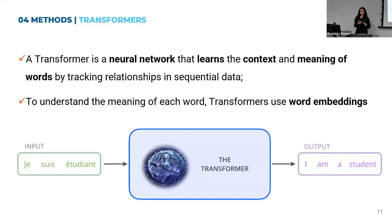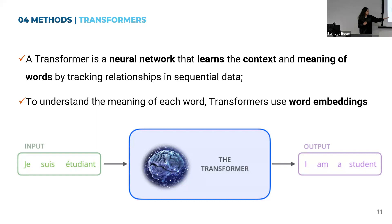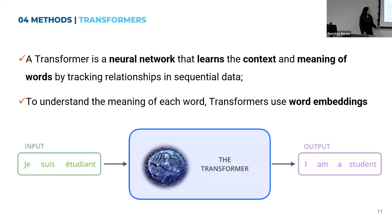Although word embeddings do not account for the relationship between different words in a sentence. To do so, transformers use a mechanism called self-attention. For example, here we have a transformer whose goal is translation. To translate a verb in French, the model, due to the self-attention mechanism, knows it has to pay attention to the subject to translate, but also knows it does not have to account for certain other words. So it's a very important mechanism.